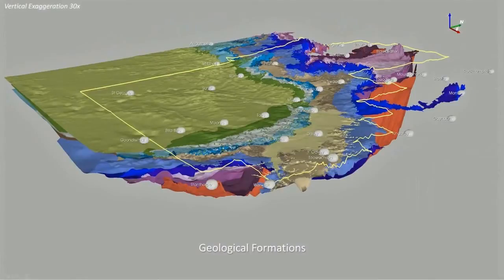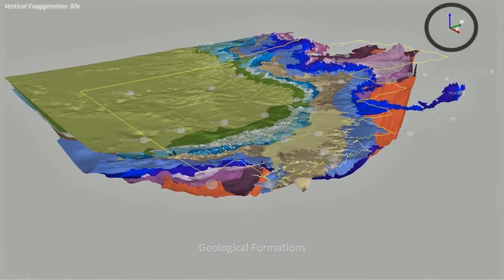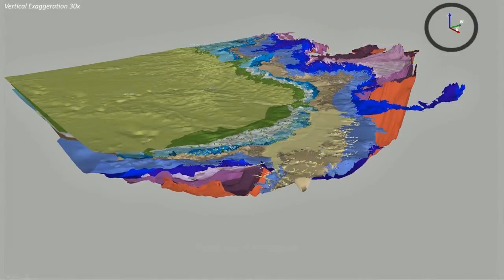Each formation is represented by a different colour. The compass in the upper right-hand corner shows the orientation of the image. The blue line points up, while the green line indicates north and the red, east.